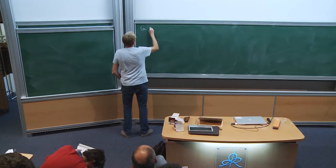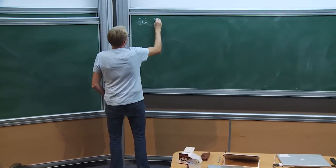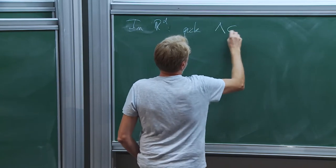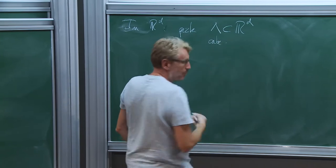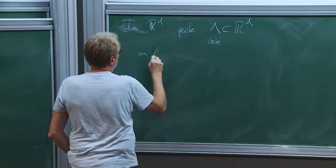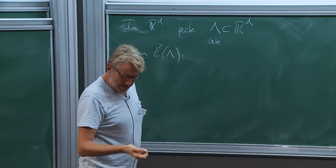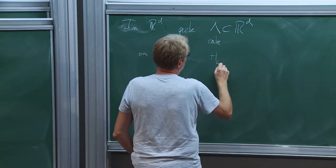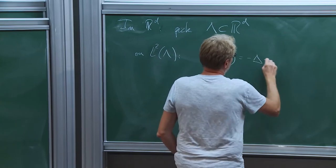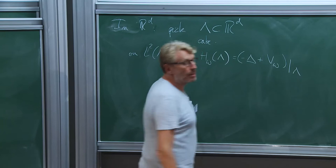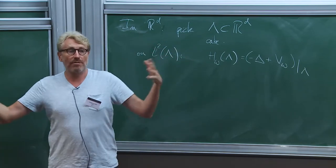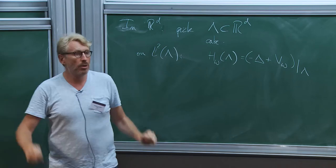So we look at — we're working in R^d instead of Z^d, right? That's our base space. And in R^d we pick, to make it simple, lambda — some volume, but to make it simple, let it be a cube. Pick some cube in R^d. And on L^2 of lambda — so this is where our particles will be living — we consider a Schrödinger operator H sub omega, lambda, which is just minus Laplacian plus some potential restricted to lambda. So I have a random potential — that's what the omega stands for — living on all of R^d, but I just consider its restriction on some cube within R^d.